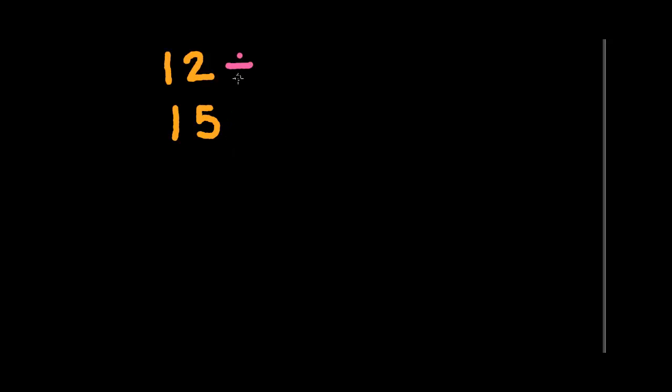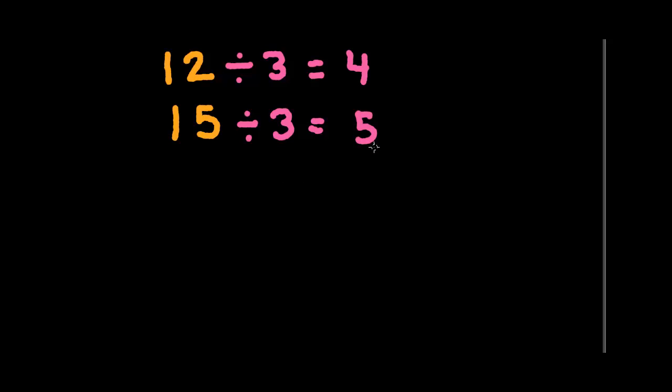Let's do another one. This time I am going to take the numbers 12 and 15. Again, I'm going to think: what numbers can I think of that divide into both 12 and 15? Now this time they're not both even, so 2 would not be a possibility. So I might think to the next number — does 3 go into both of them? And it does. So I'm going to divide them both by 3. 12 divided by 3 gives me 4, and 15 divided by 3 gives me 5. 4 fifths would be a fraction in lowest terms, so I know that I am done.